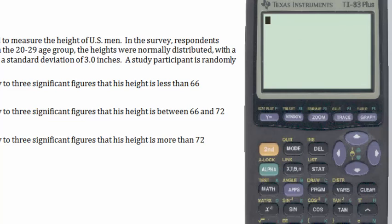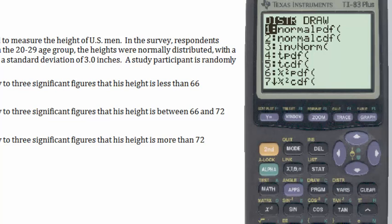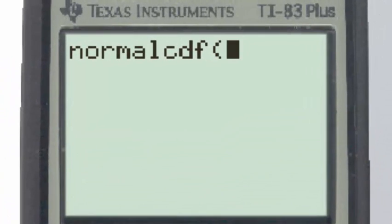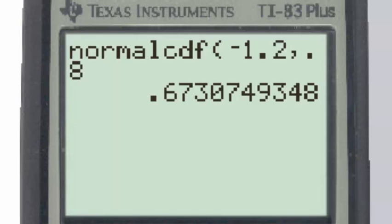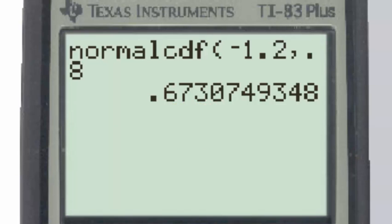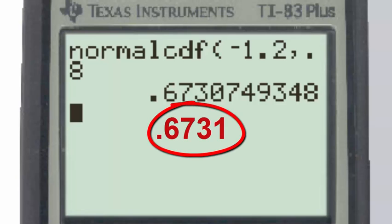Using the second method, we go to the second key, and then the distribution button, and then press the number 2 to bring up the normal cumulative density function. The input into the normal cumulative density function will be the z-scores that we found previously, negative 1.2 and 0.8. And now when we press the enter key, the answer is the decimal that we get for the probability, or area. And again, to three significant figures, this answer will be 0.673. And to four significant figures, the answer would have been 0.6731.